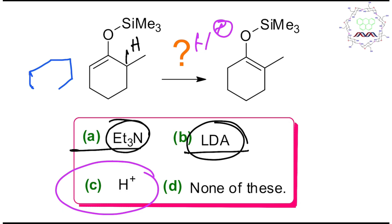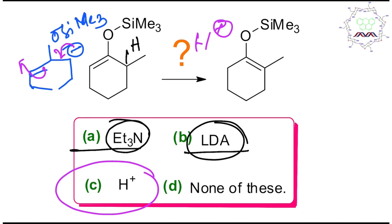If we abstract that proton, we get an OSiMe3 group and a carbanion here. How will it be stabilized? It is not that much stabilized. You might say it can push electron density — no, student, it is not that much stabilized. Not only that, there is a methyl group here, so steric effect is also present and acidity is less. Why would this reaction happen? It is not possible. That is why the best reagent for this conversion is H+. Always remember: when an MCQ is given, it is asking for the most correct answer. Triethylamine is too weak, so it can't do anything.